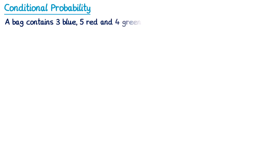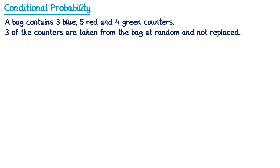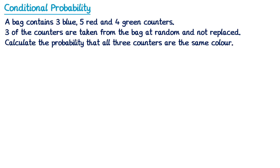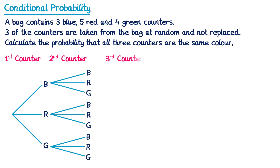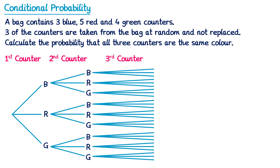Sometimes a probability tree diagram is not necessarily the best approach. In this question we have a bag that contains three blue, five red and four green counters. We're going to take three of the counters at random without replacing them and calculate the probability that all three counters are the same colour. If we drew a full probability tree we'd have three options at each of three stages, giving a very large diagram. But this question only asks us about all three being the same colour, so the tree diagram is really big and unnecessary.